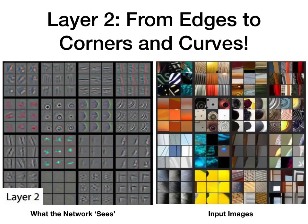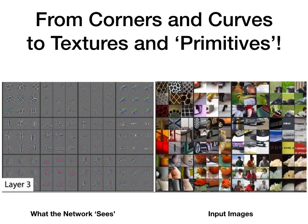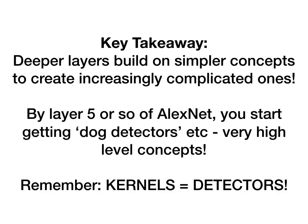This trend continues as we go deeper into the network — we get higher and higher level representations. When we move to the third layer, we're not just looking at corners or round shapes anymore; we're looking at entire textures or even primitive objects like the leg of a person. As we go deeper and deeper, these detectors are building on one another, combining together and creating higher level concepts. This is the fundamental principle that makes convolutional neural networks so powerful: you build on simple concepts to create complicated ones deeper and deeper into the network.